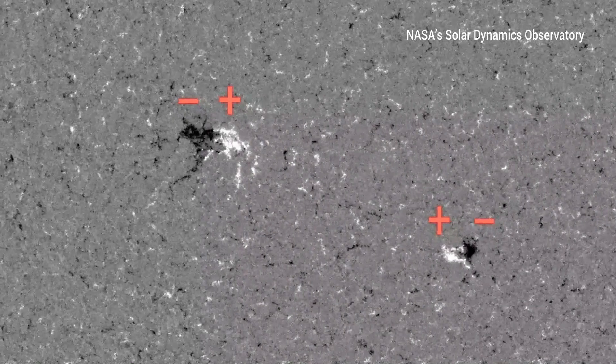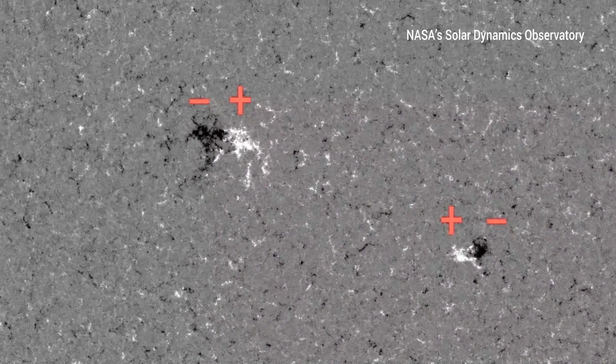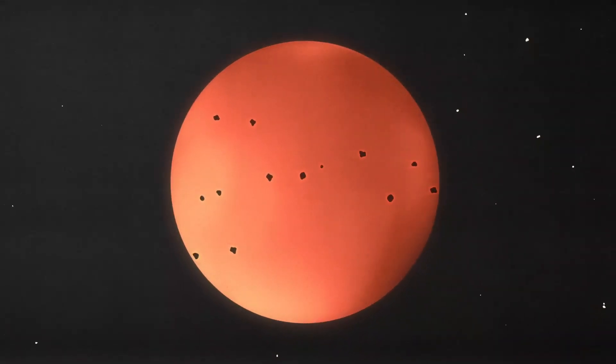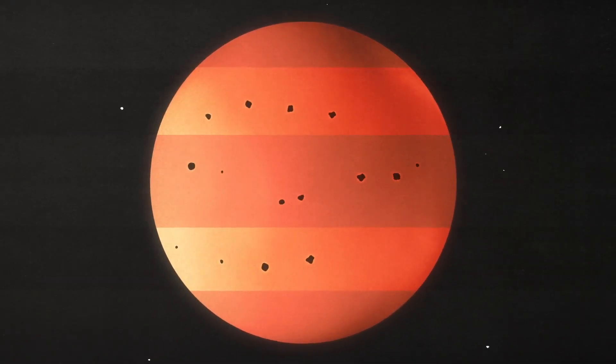Scientists look for a consistent string of these new sunspots in order to declare the next solar cycle. But the transition between cycles is slow and messy. Cycles often overlap.